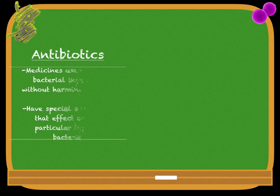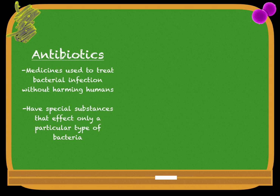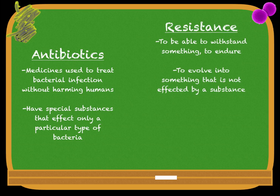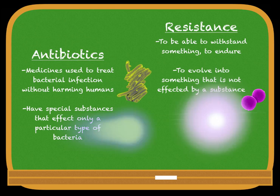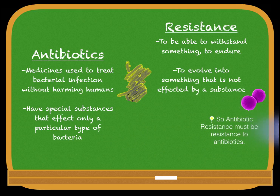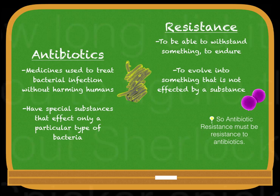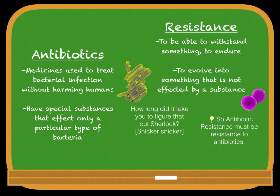Antibiotics are medicines used to treat bacterial infections without harming humans. They have special substances that affect only particular types of bacteria. Resistance is to be able to withstand something, to endure — or to have evolved into something that is not affected by a substance. So, antibiotic resistance is resistance to antibiotics. How long did it take you to figure that out, Sherlock?